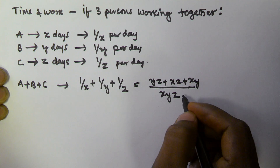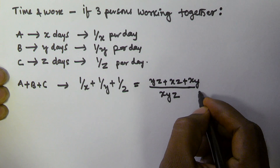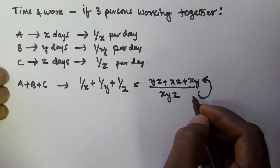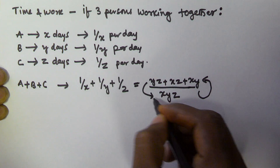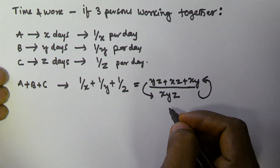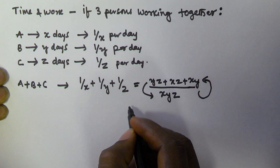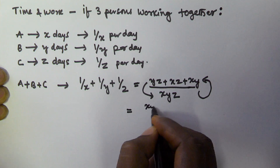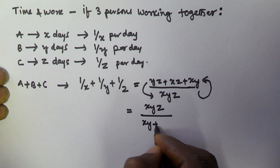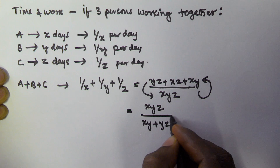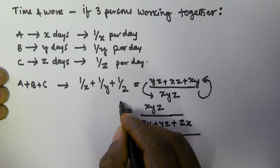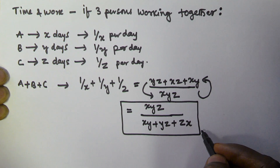To get the number of days, we have to reverse this equation — numerator to denominator and denominator to numerator. So the number of days for A, B, and C together to finish the work is XYZ / (XY + YZ + ZX).